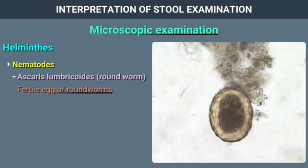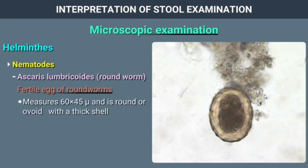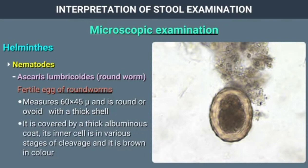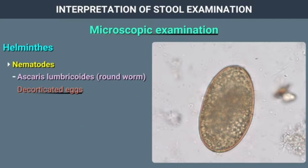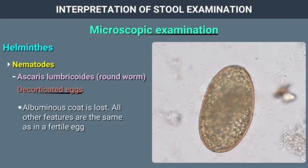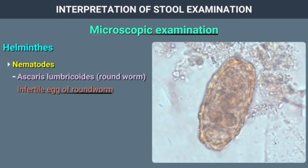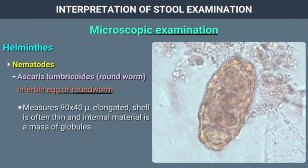Ascaris lumbricoides (roundworm): The fertile egg measures 60 by 45 microns. It is round or ovoid with a thick shell covered by a thick albuminous coat. The inner cell is in various stages of cleavage and is brown in color. Decorticated eggs have lost the albuminous coat. The infertile egg measures 90 by 40 microns; it is elongated, often with a thin shell, and its internal material is a mass of globules.